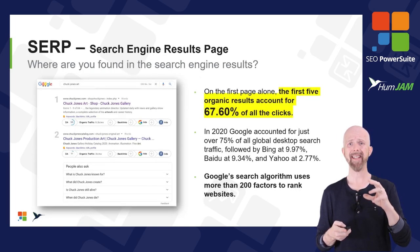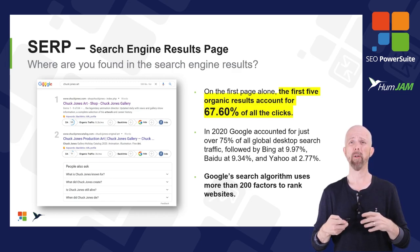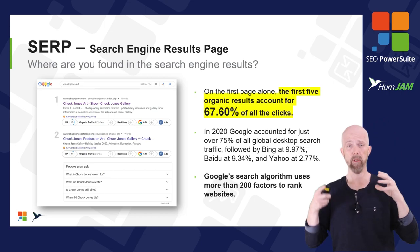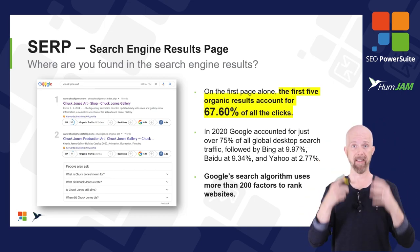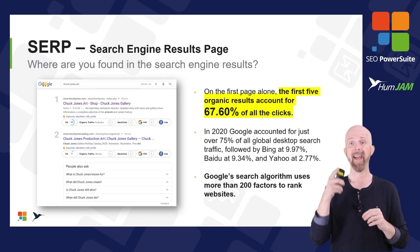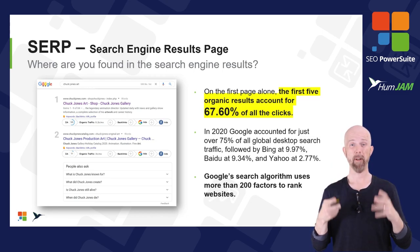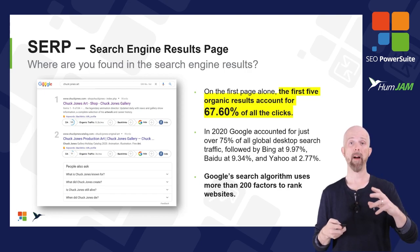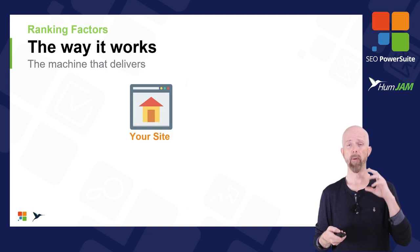The SERP — Search Engine Results Page — is what shows up when you type a search phrase into Google. Showing up in the first five positions is responsible for 67% of all clicks, which is why we want to optimize and get to the top.